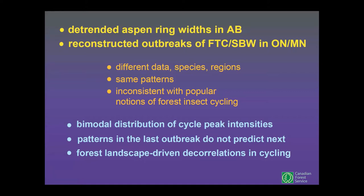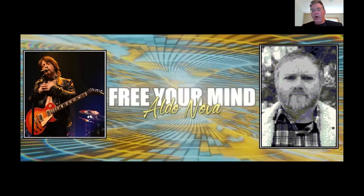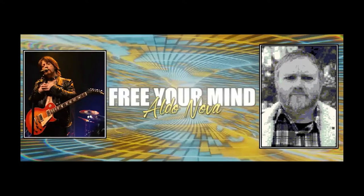To summarize, whether looking at detrended aspen ring widths in Alberta or outbreak reconstructions in Ontario and Minnesota, you have different data streams, different species, and different regions all showing the same patterns — patterns inconsistent with popular notions of forest insect cycling. First, the distribution of cycle peak intensities is bimodal, not unimodal. Second, the spatial pattern of the last outbreak is the worst possible predictor of the next outbreak. Finally, there are decorrelations in cycling behavior consistently driven by forest landscape structure. The notion that these insects cycle synchronously is simply wrong. The take-home message: free your mind when looking at space-time data, and open your eyes to what the data are telling you.